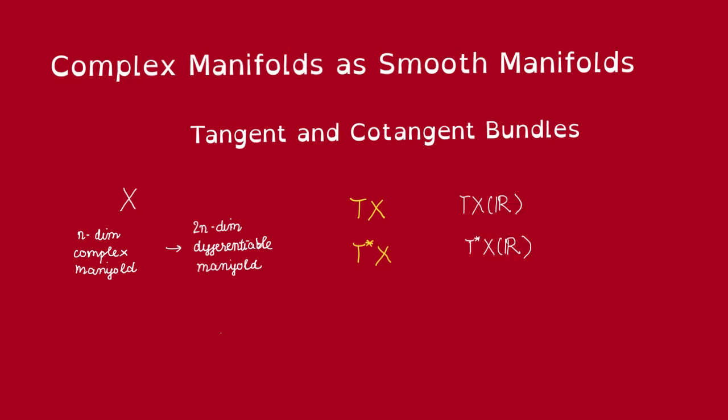As a smooth manifold, X must have a tangent bundle and a cotangent bundle. Now we define the tangent and cotangent bundle of X to be the complexification of these tangent and cotangent bundles.